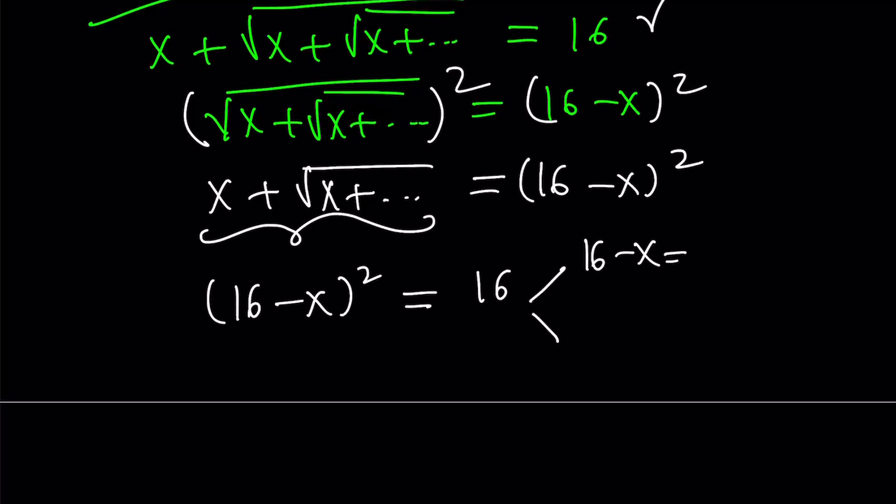16 minus x can be 4, which means x can be 12. Or 16 minus x can be negative 4. This is what we mean by the negative square root. Normally, if you're taking the square root of 16 in the real world, it would be positive 4 only. There aren't two square roots in the real world. This would be x equals 20. But as you know from earlier, x equals 20 does not work. Therefore, we end up with x equals 12.